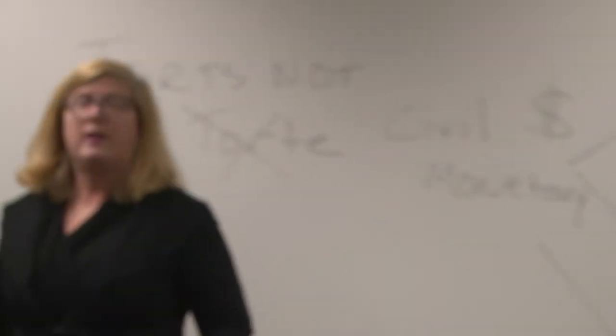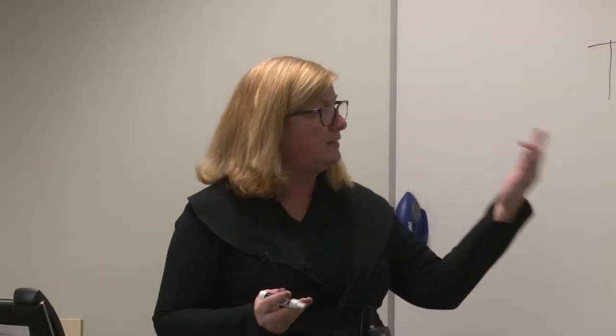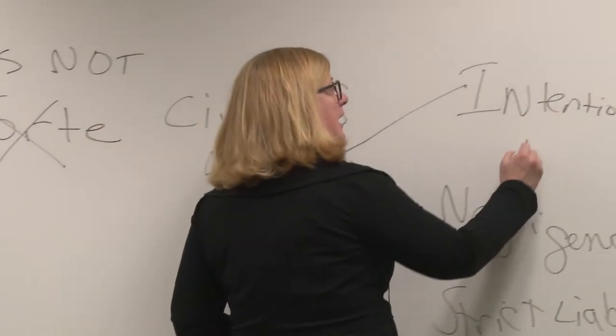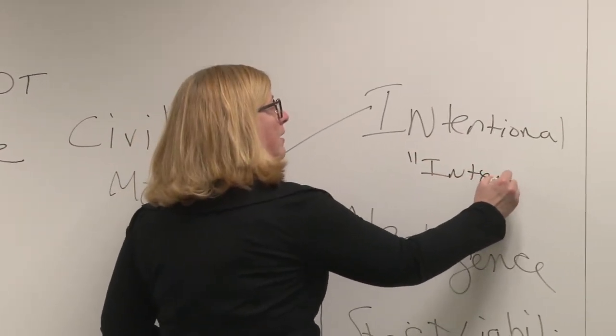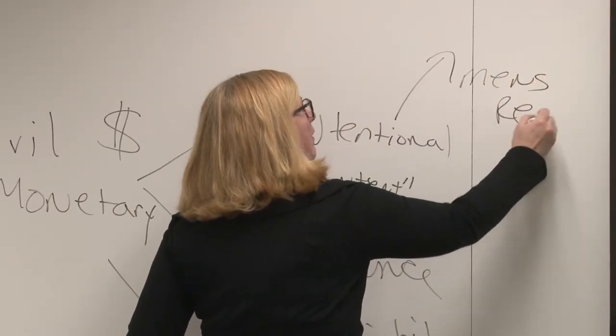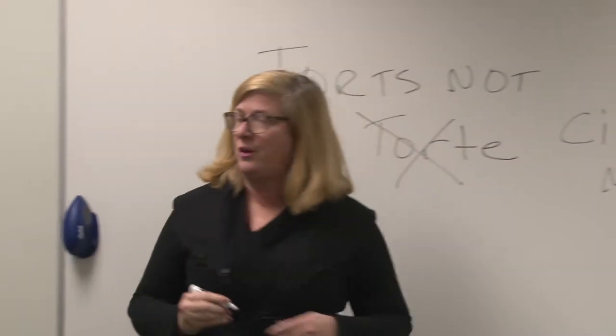An intentional tort is one where the person conducting the action knew what they were doing, knew it was wrong, knew the consequences, and had intent. In criminal law we call this mens rea — the person knew they were doing it. We have a body of seven or eight intentional torts. First, we talk about the A and B's: assault and battery.